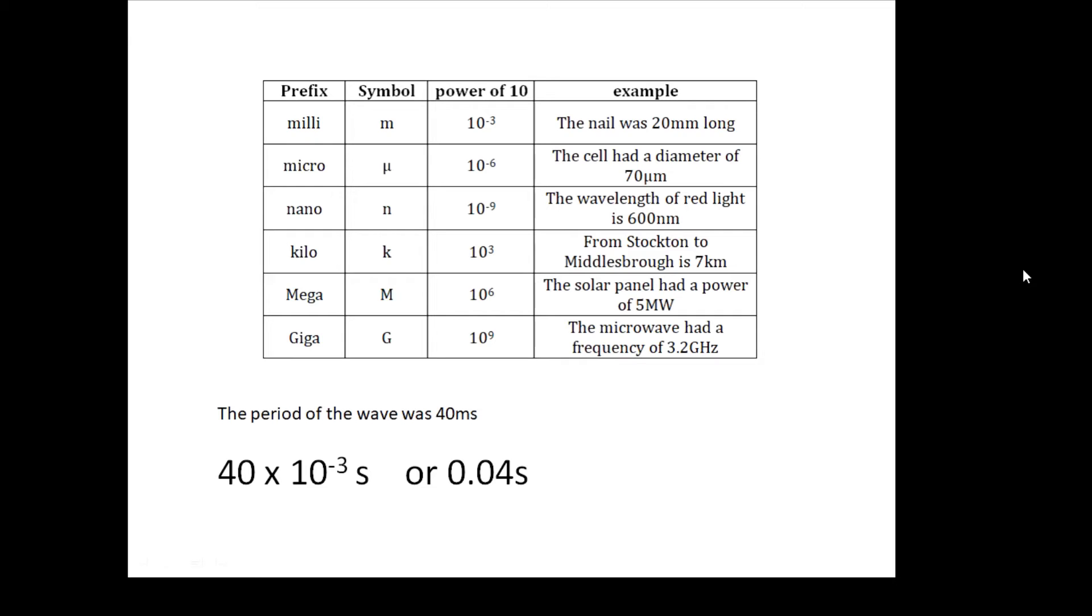In biology, when you do magnification, you have to use them as well. So, milli, little m, is 10 to the minus 3. The nail was 20 millimeters long. Micro has this symbol, mu, 10 to the minus 6. The cell had a diameter of 70 micrometers. And nano, little n, is 10 to the minus 9. The wavelength of red light is about 600 nanometers, 10 to the minus 9 meters.